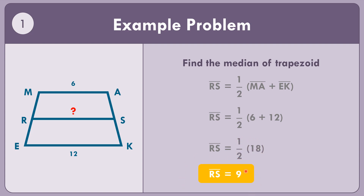So segment RS equals 9. You can observe a pattern: 6 plus 3 equals 9, and 9 plus 3 equals 12. You can solve based on the pattern or using the formula. The segment RS is equal to 9.